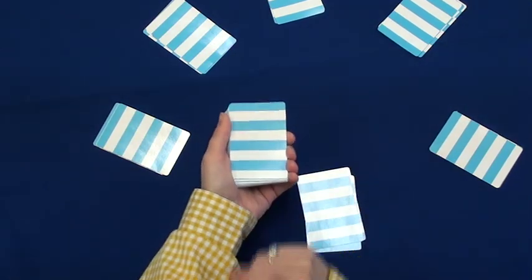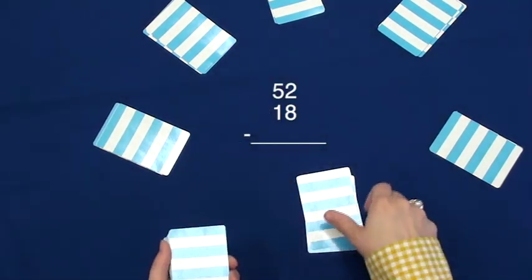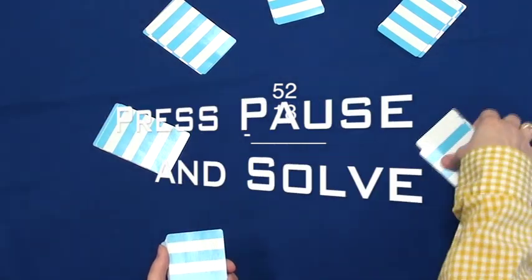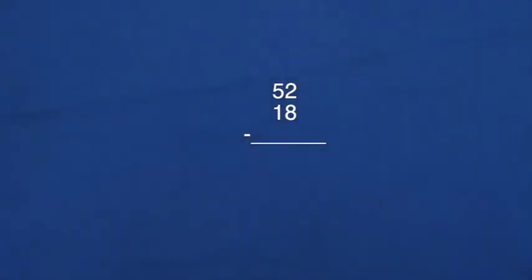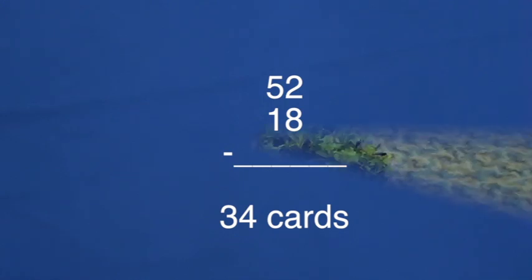There are fifty-two cards in her deck, and she has dealt eighteen cards. How many are still in the draw pile? Press pause, grab a pencil and paper, and solve. Press play when you think you have the solution. There are thirty-four cards left in the draw pile.